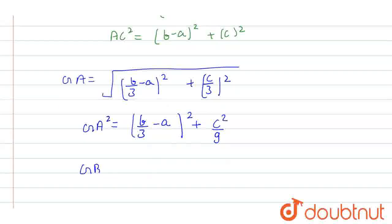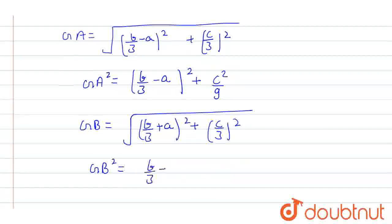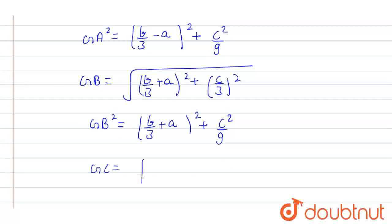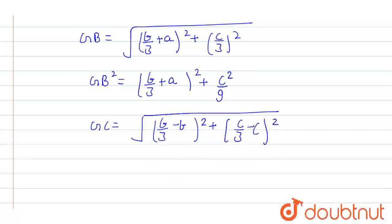Similarly, we find GB. G is (b/3, c/3) and B is (-a, 0), so GB = √((b/3 + a)² + c²/9). Therefore GB² = (b/3 + a)² + c²/9. Similarly, GC: G is (b/3, c/3) and C is (b, c), so GC = √((b/3 − b)² + (c/3 − c)²), giving GC² = 4b²/9 + 4c²/9.